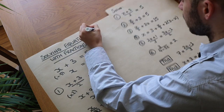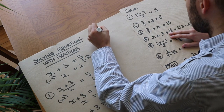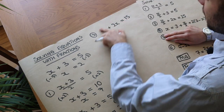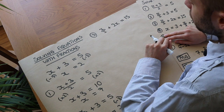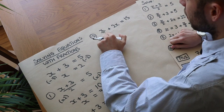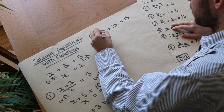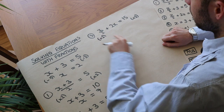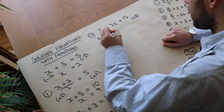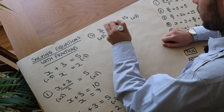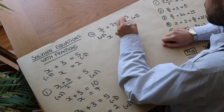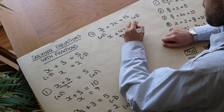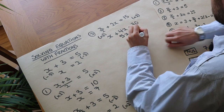Getting increasingly harder. We've got x over 2 plus 2x is equal to 15. A good first step whenever you see fractions in an equation is to try and get rid of them. Since we have an over 2, we multiply both sides by 2. That eliminates the over 2 from the first term, and multiplying 2x by 2 gives 4x, and 15 times 2 is 30. Collecting like terms, 1x plus 4x is 5x, and dividing both sides by 5 gives x equals 6.